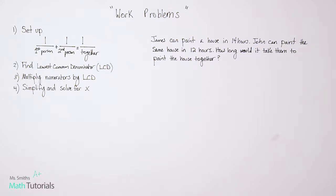So we're going to follow some very specific steps. Our first step is going to be to set up the equation, and we're going to use the same general setup each time. You do one divided by the first person, we'll actually put the person's name in, plus one divided by the second person equals one with them working together. That's going to be our setup each time. And then step two, we're going to figure out what is our lowest common denominator or our least common denominator. We'll hereby refer to that as the LCD. Step three, we're going to multiply the numerators by the LCD. And then step four, we're going to simplify and solve for x.